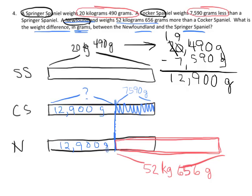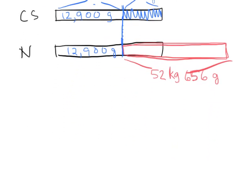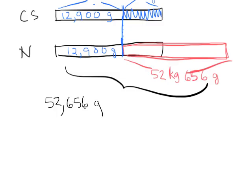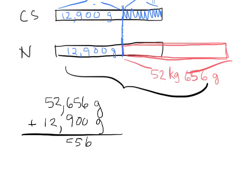Now we need to figure out how much the newfoundland weighs, so I'll convert 52 kilograms 656 grams into 52,656 grams and add the cocker spaniel's weight of 12,900 grams. Adding those together gives us 65,556 grams. That's how much the newfoundland weighs — that thing is huge!